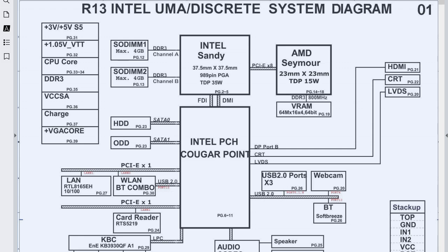We're going to see some outlines including the system power, which is the most important part of any schematic. You should always focus on system power. Here we have plus 3V and 5V always, which is basically in the S5 state. For more on S states like S5, S3, S1, S0, you can go to my channel where I have a dedicated video on laptop states.